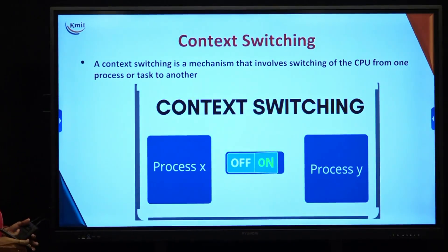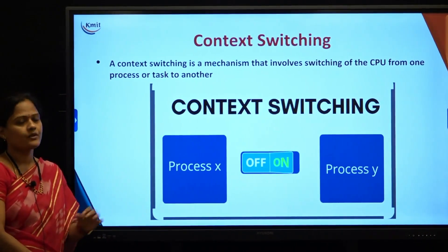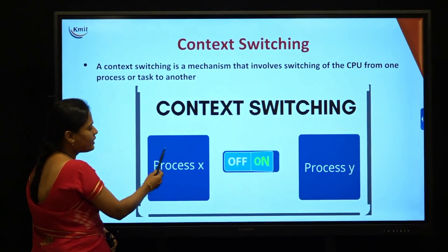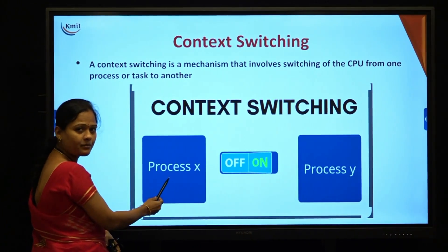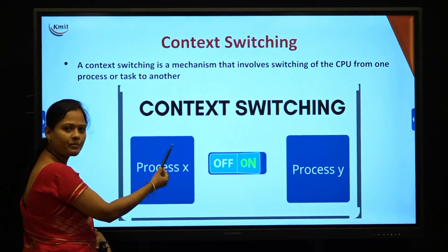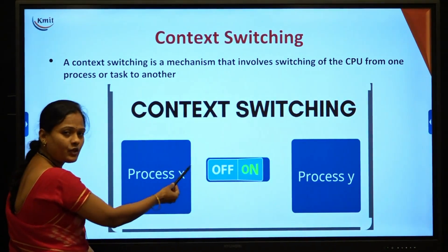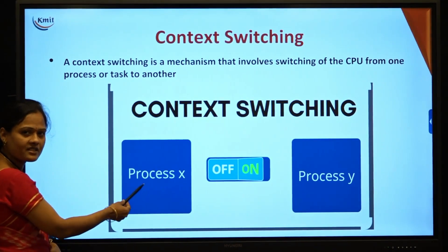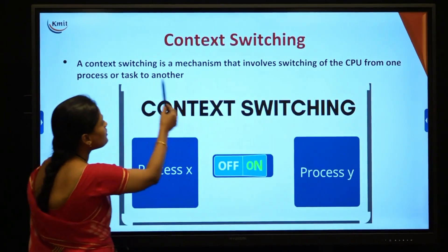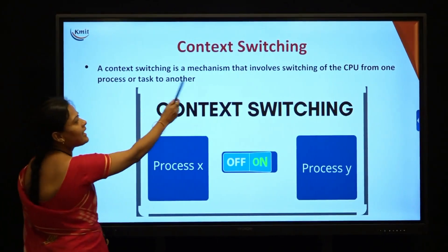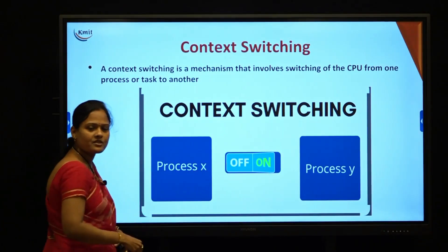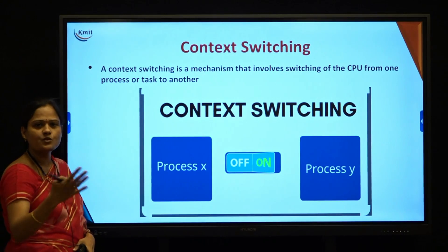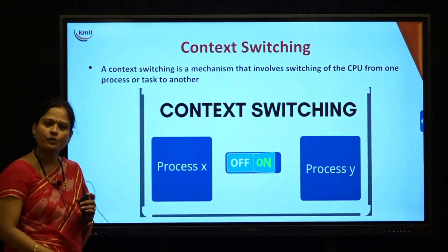Related to the process is another topic: context switching. Context switching involves the scenario where you have more than one process — say process X and process Y. Initially process X is being executed by the CPU, and after some time, due to an interrupt or a higher-priority process becoming ready, process X is moved to an off state and the CPU jumps to process Y. Context switching is a mechanism involving switching the CPU from one process to another, and it is only applicable when you have more than one process. With a single process, there is no need for context switching.